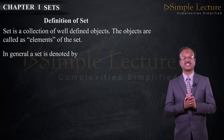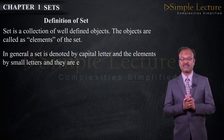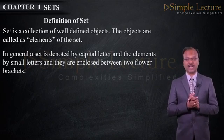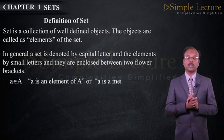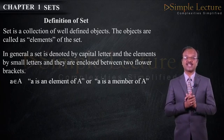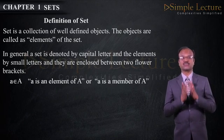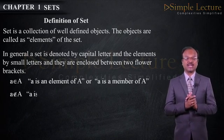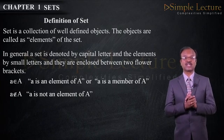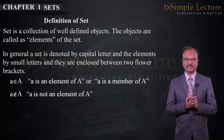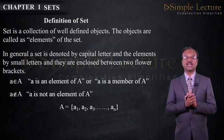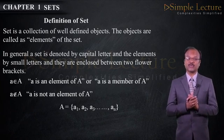In general, a set is denoted by capital letter of the English alphabets and the elements by small letters and they are enclosed between two flower brackets. The small letter a belongs to capital letter A means a is an element of the set A or a is a member of the set A. Small letter a does not belong to the capital letter A represents the element a is not the element of the set A. Set A is equal to a₁, a₂, a₃ up to aₙ enclosed between two flower brackets.